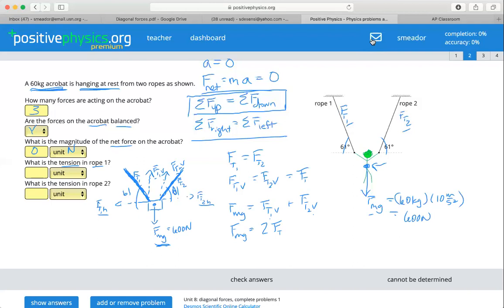So now we can say 600 newtons is equal to two times f of t in the vertical. So 300 newtons is equal to f of t in the vertical.